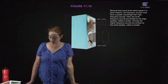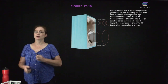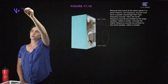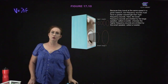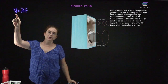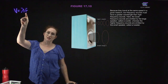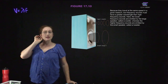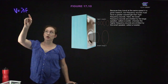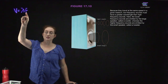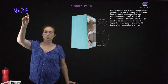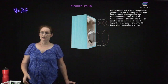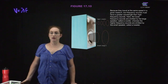Because sounds travel at the same speed in air, and from last chapter we remember that speed equals wavelength times frequency, if you have a low frequency sound it has a higher wavelength than a high frequency sound. The sounds you hear as high pitch are high frequency sounds. The sounds you hear as low pitch are low frequency sounds, and low pitches have long wavelengths while high pitches have short wavelengths.